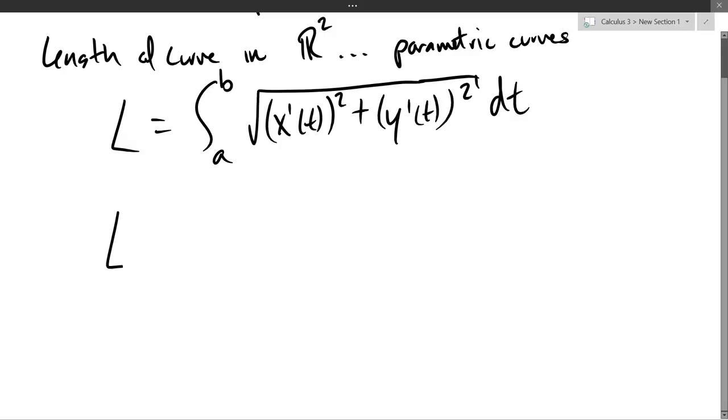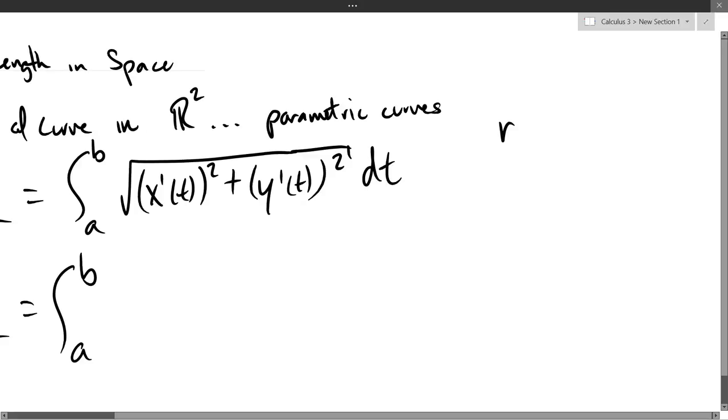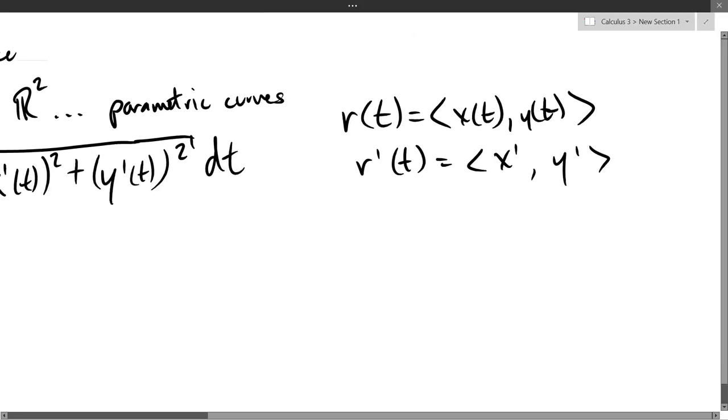So what I'm going to do instead, we have our original—I should write down what our curve is. Of course, here we have r of t is our function, our x function, x(t), comma, y(t). And r prime of t, of course, is x prime. Can I just be lazy and go x prime, y prime? Yeah. Okay. One yes, sounds good. All right, so there's derivative.